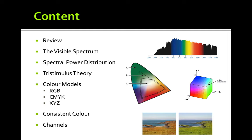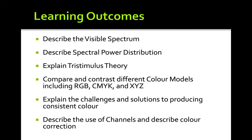Welcome back. Today we'll be talking about images — another lecture on images. We'll cover the visible spectrum, spectral power density, tristimulus theory, and different color models based on that theory: red, green, and blue; cyan, magenta, yellow and key; and XYZ. We'll also talk about consistent colors and channels.